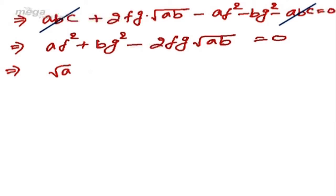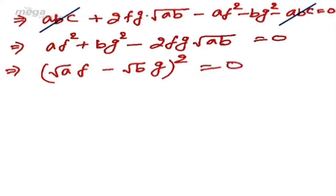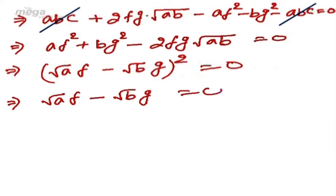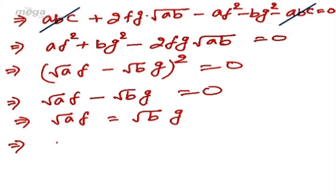This expression af² + bg² - 2fg·√(ab) = 0 is equivalent to (√a·f - √b·g)² = 0, which gives √a·f - √b·g = 0. Therefore √a·f = √b·g, which means √a / √b = g / f.